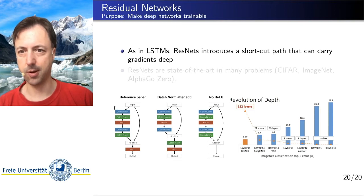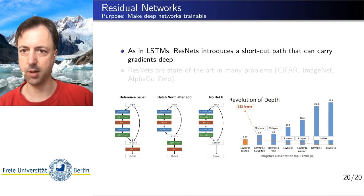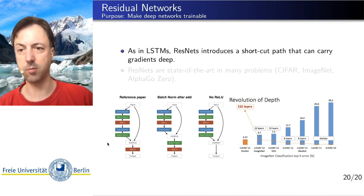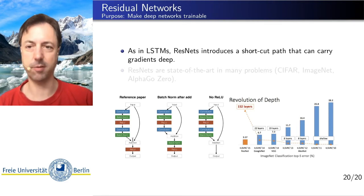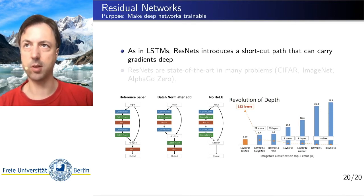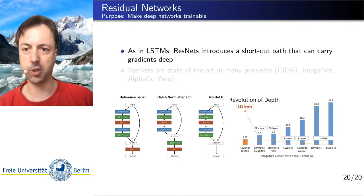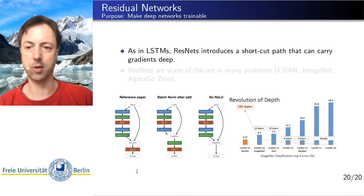Because we can learn the non-linear part, we can decide to essentially just copy the input and ignore whatever is going on there, or we can make a significant modification and make the addition of the input irrelevant. We have this flexibility. We do not reduce the expressiveness of the function by adding skip connections — we only increase it. We also allow the network to carry gradient information deep by using these skip connections, and that is what makes the network trainable even if it's deep, just as in LSTMs.